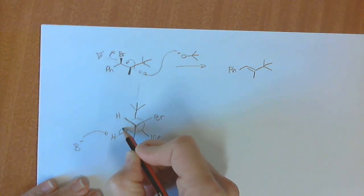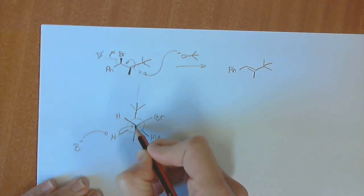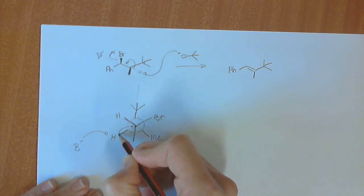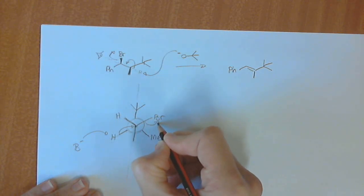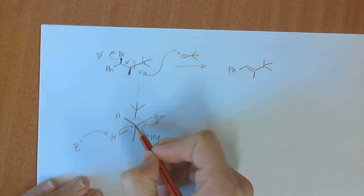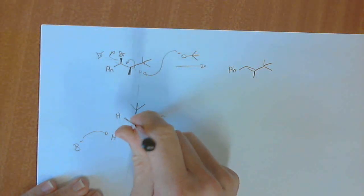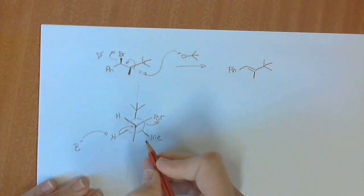And so when the base comes in, it can pick up this. This goes in to form that double bond that's kind of between this carbon and the one at the back. It's difficult to draw because it's flat. And then this will come out. And because of that, the double bond which is forming here, my pencil is, right.